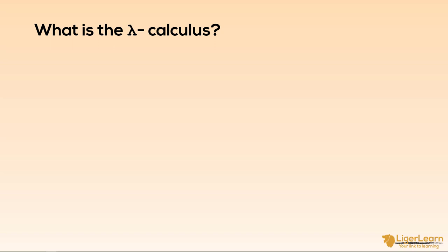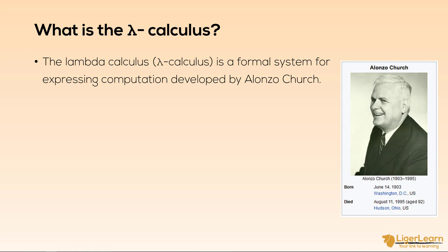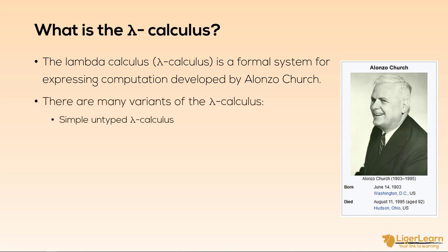So what exactly is the lambda calculus? The lambda calculus is a formal system for expressing computation developed by Alonzo Church, who was born in 1903 and died in 1995 in the United States. It's called the lambda calculus because the Greek letter lambda is used to define expressions and terms within the system. There are many variants, including the simple untyped lambda calculus, the simple typed lambda calculus, System F, the polymorphic lambda calculus, System F omega, and others. For this course, we will only cover the simple untyped lambda calculus. For those interested in finding out more, I would recommend researching the Hindley-Milner type system and System F after completing this module.